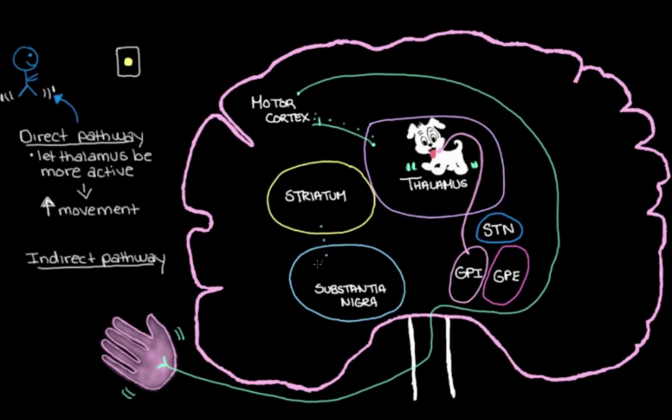But when we lose these dopamine neurons in the substantia nigra, the substantia nigra can't send much dopamine to the striatum. So this means that it can't amplify the direct pathway. It can't excite our muscles even more. So we can't get that extra muscle movement to get our friend here across the street faster.